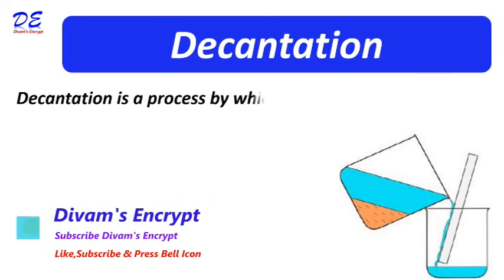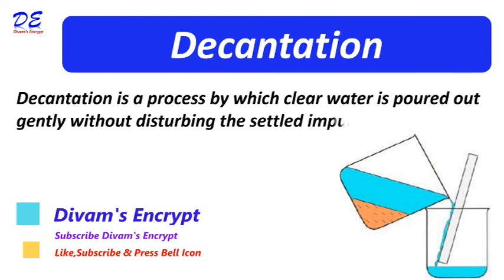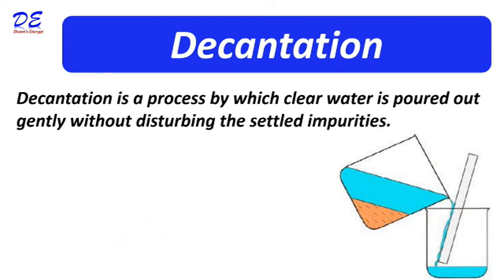Decantation is a process by which clean water is poured out gently without disturbing the settled impurities. Here you can see two containers. One container is filled with raw water. Clean water is poured into another container without disturbing the impurities. We can put one metal strip so that water can be poured into another container to avoid disturbance to the flow.